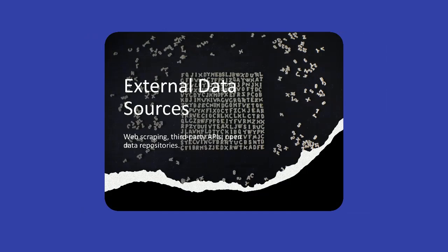External sources would include web scraping — for example, collecting data from publicly available websites, social media feeds, or online marketplaces. There are also third-party APIs using services from Google, AWS, Twitter, OpenWeather, and other platforms. Additionally, open data repositories such as datasets from Kaggle, Google Datasets, and other open data sources.